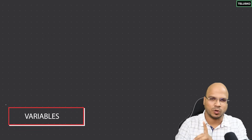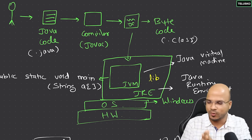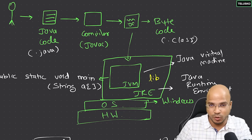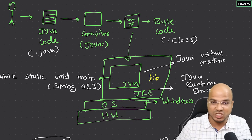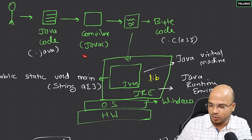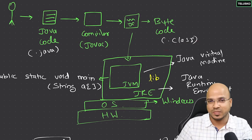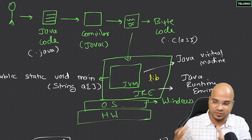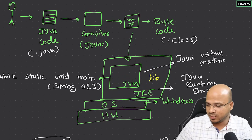We ran this code and understood what is happening behind the scenes. As a Java developer, you write Java code with a .java extension, which gets compiled by javac. The output is bytecode with a .class extension, which you can run in the JVM. The JVM is part of the JRE, which also includes libraries and classes.